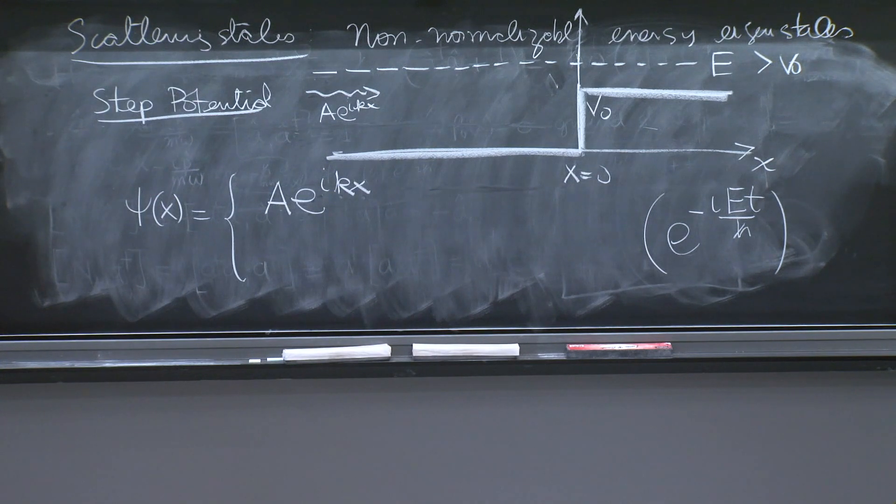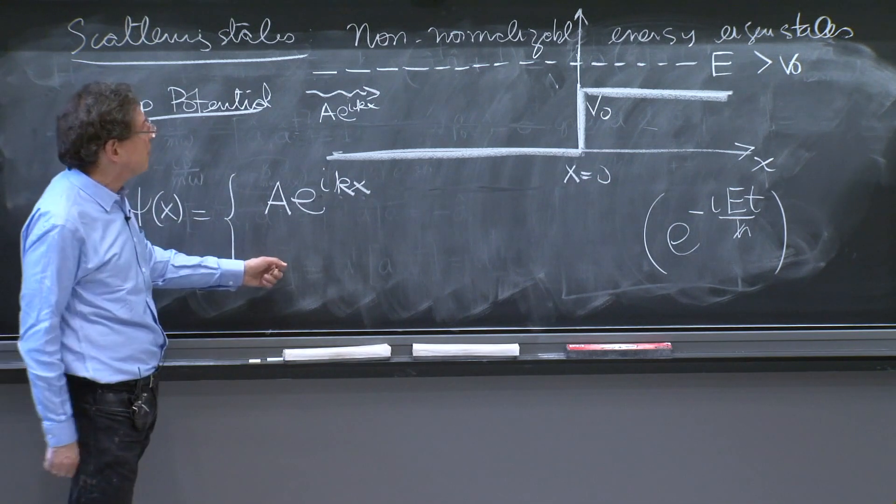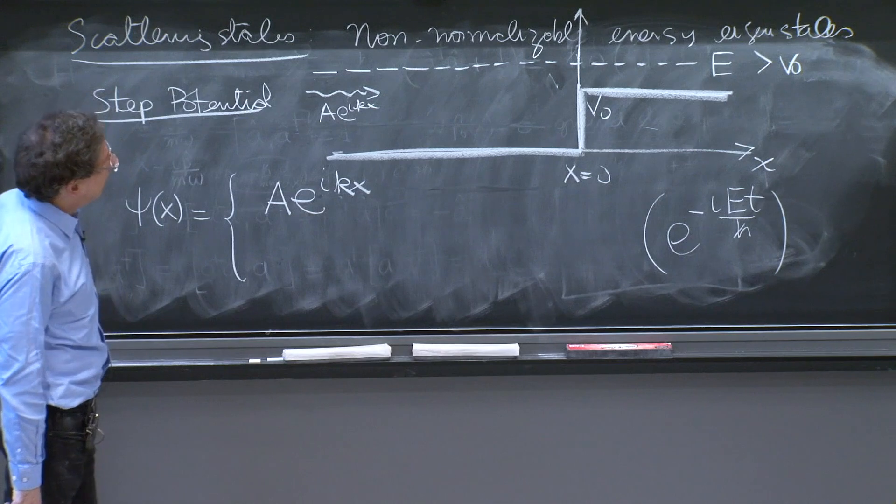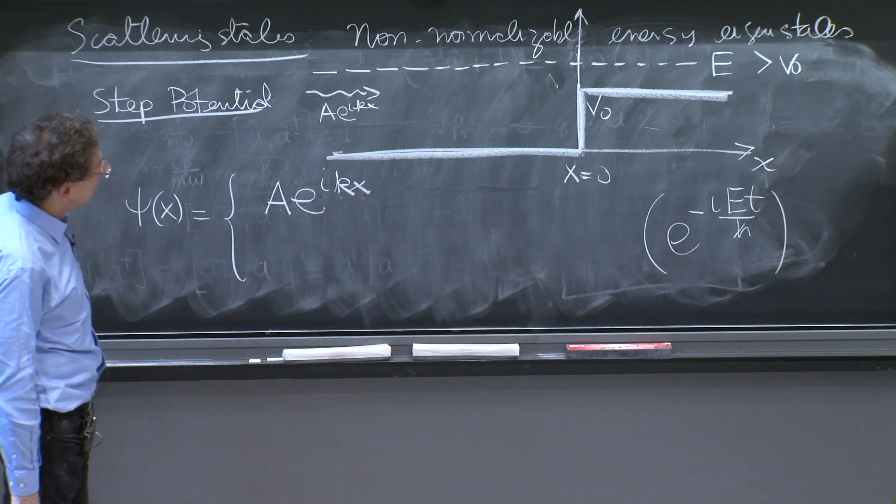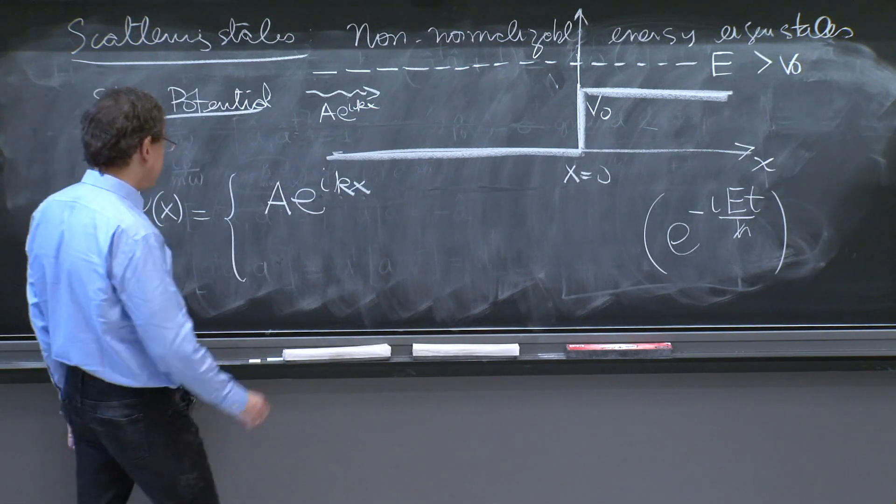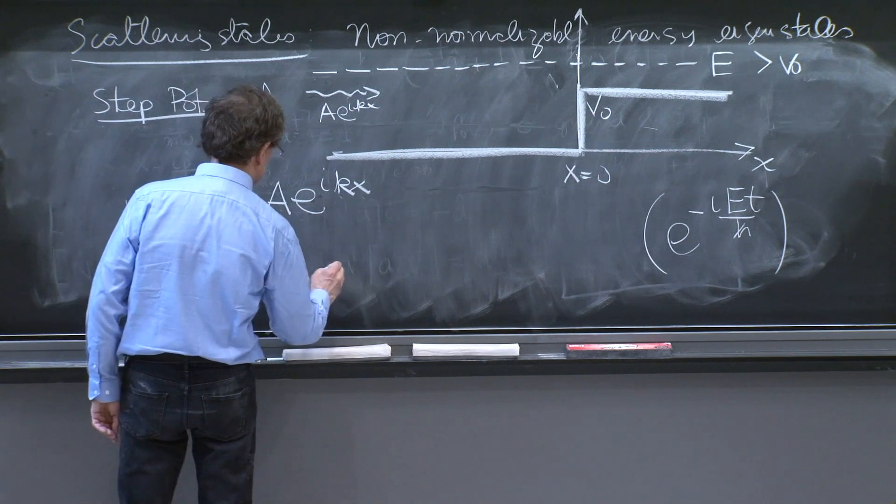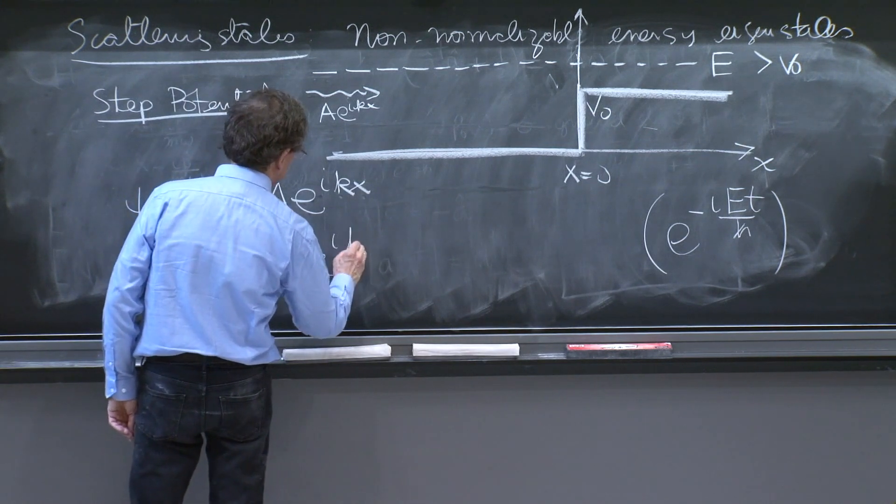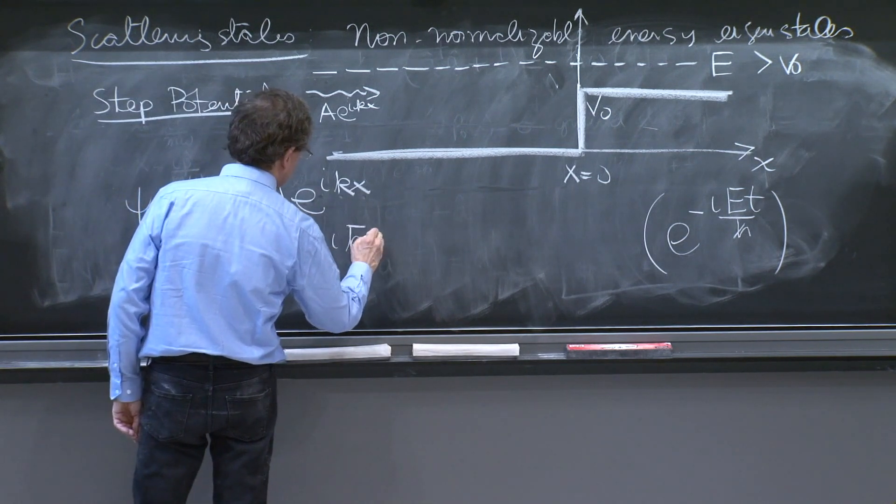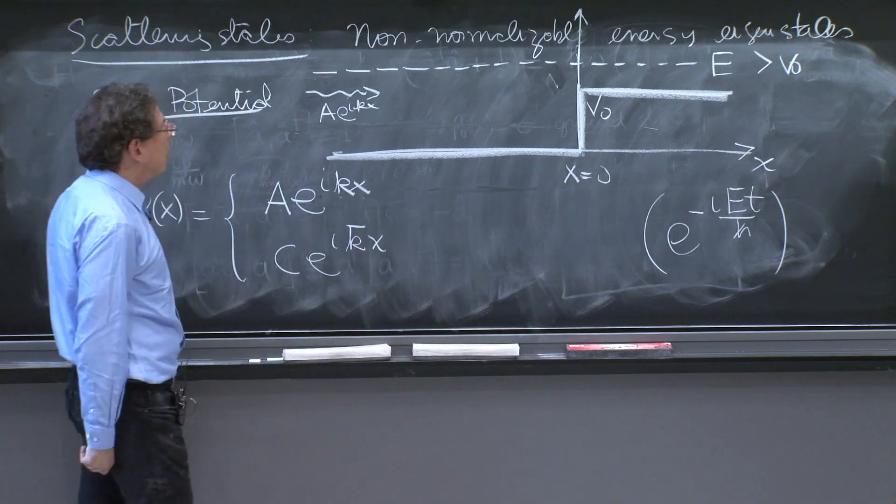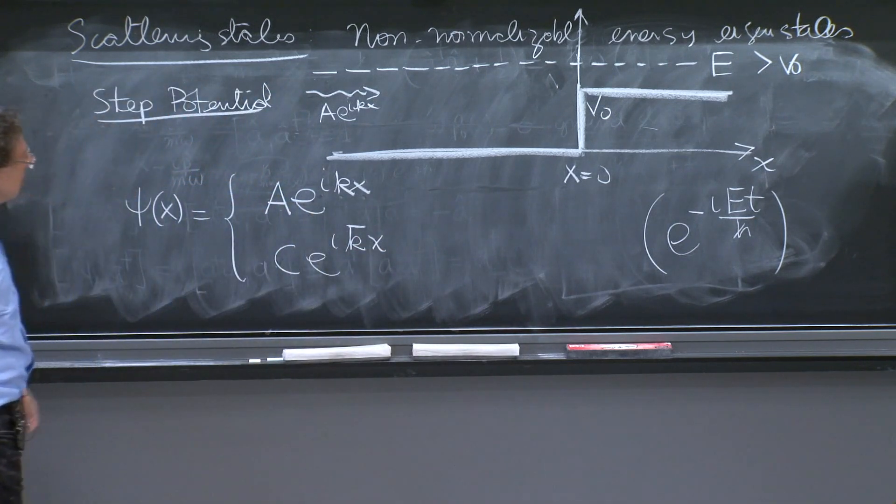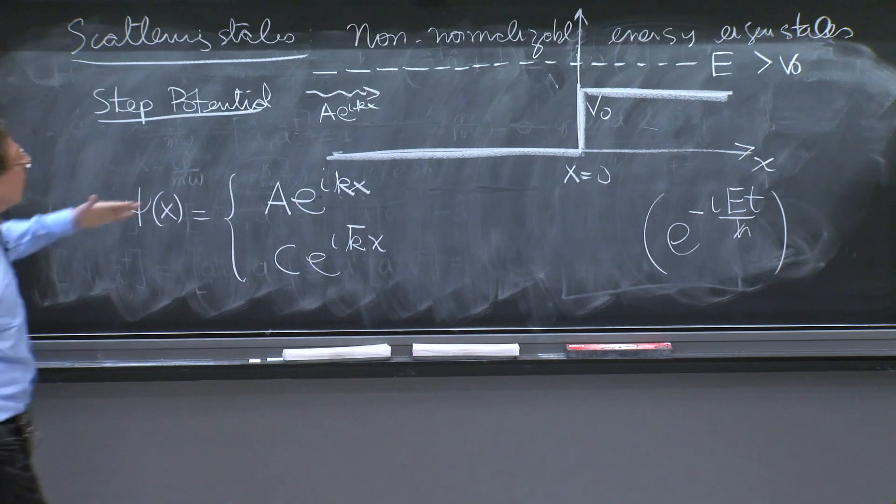And then what will happen? Now, it's a matter of finding a solution of Schrodinger's equation. So you can try to find a solution of Schrodinger's equation. But you have to write some answers for what's happening on the right. I will write an answer here that will put c e to the i k bar x. Another k, well, we'll see now what those k's are.